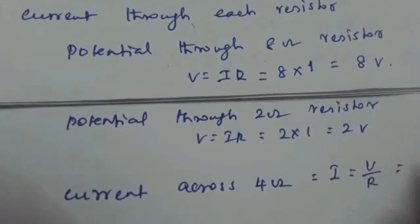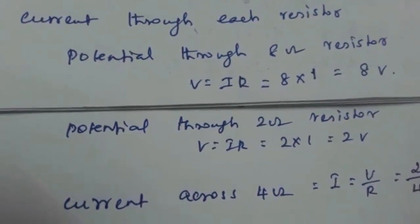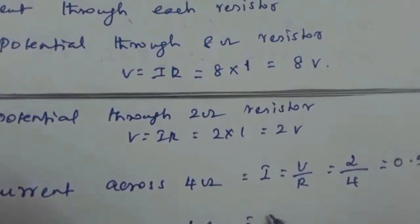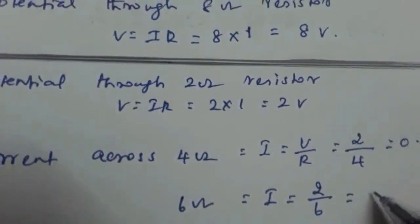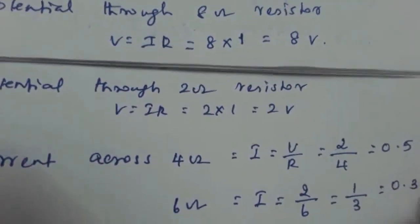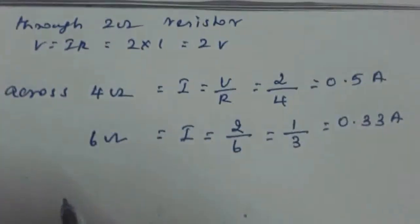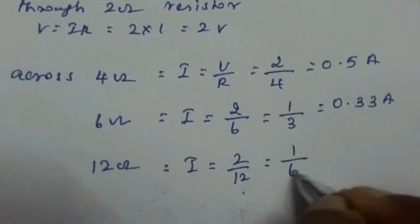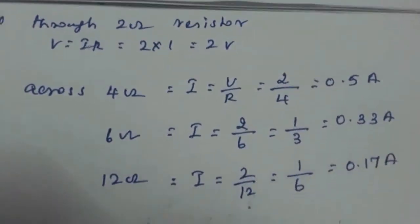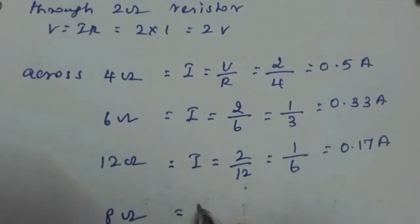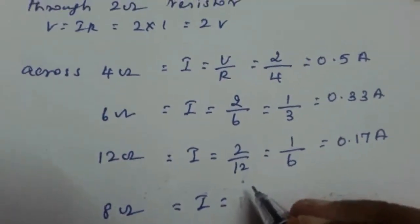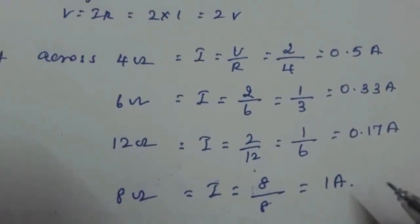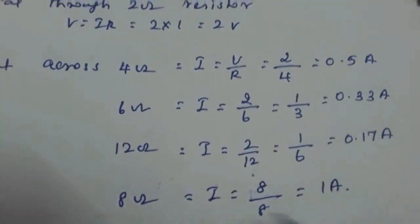Using I = V/R with potential of 2 volts across the parallel resistors: current through 4 ohm is 2/4 = 0.5 ampere. Current through 6 ohm is 2/6 = 1/3 ≈ 0.33 ampere. Current through 12 ohm is 2/12 = 1/6 ≈ 0.17 ampere. Current through 8 ohm is 8/8 = 1 ampere.